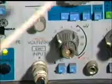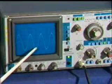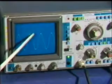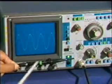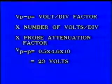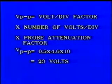Read the volt division factor, which is 0.5 volt. Count the number of volt divisions, which is 4.6. Read the probe attenuator factor, which is 10. The formula used is: peak-to-peak voltage equals volt division factor multiplied by number of volt divisions multiplied by probe attenuator factor. As per calculation, the peak-to-peak voltage is 23 volts.